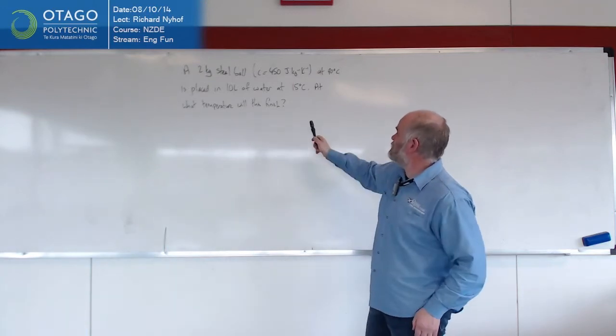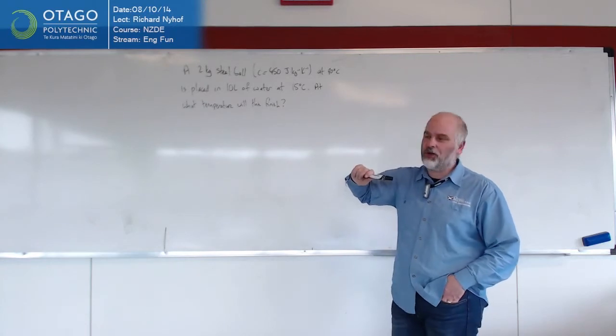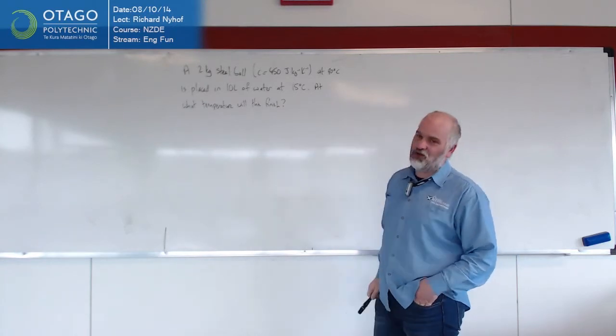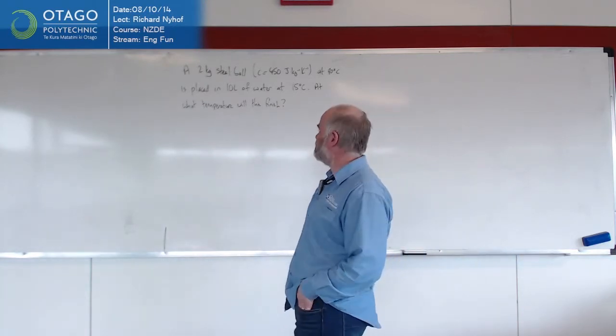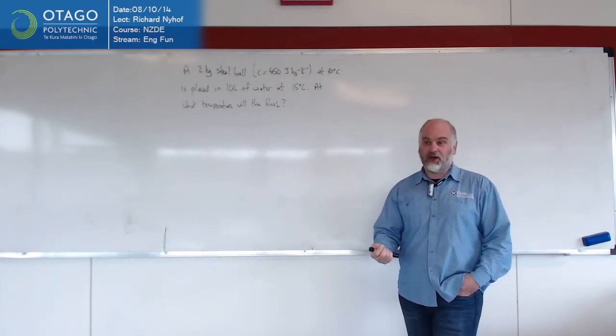And we've agreed that it's going to be between 15 and 90, because the water's going to heat up and the steel's going to cool down, and we have speculation on 45, as Ricky's guessing what it's going to look like. So the question is, how do we actually go about doing this?